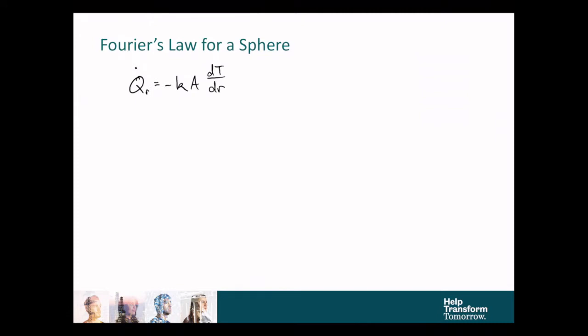So we'll start with the generic form of Fourier's law, which has an area dependence, and we know that as the radius of a sphere increases, the surface area through which heat transferring radially moves is also increasing.